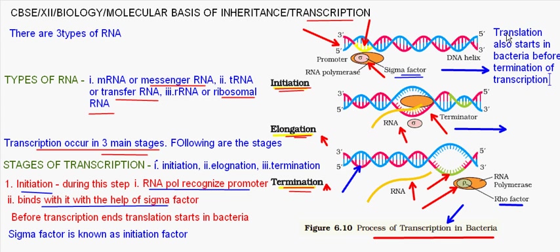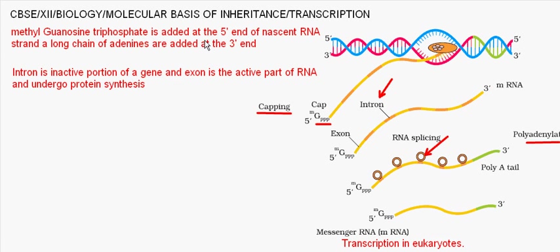Now coming to the difference between transcription in bacteria or prokaryotes versus eukaryotes. The site for transcription in eukaryotes is the nucleus, whereas the site for translation is the cytoplasm. This is one of the main reasons capping and polyadenylation are done in eukaryotes — to protect the nascent or newly synthesized RNA from cleavage by ribonucleases.